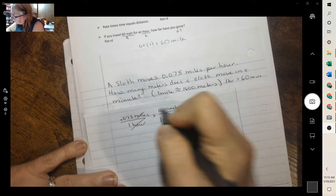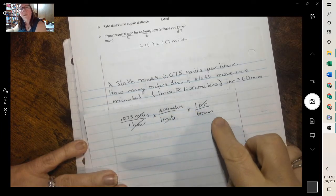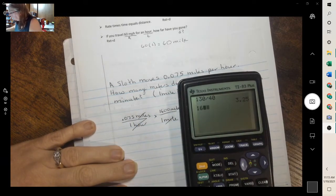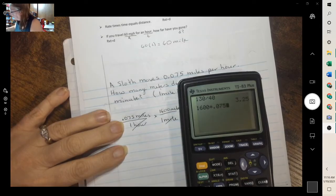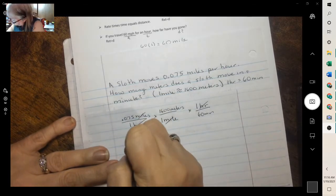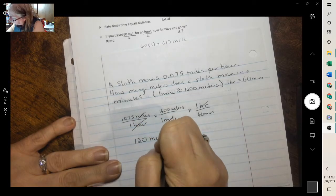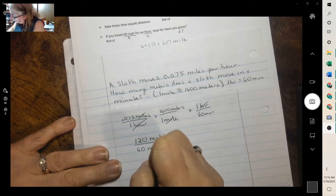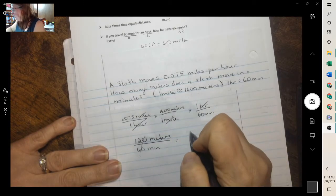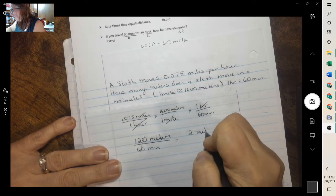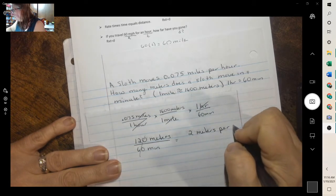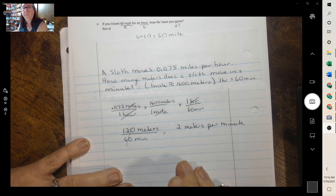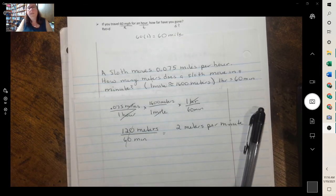Multiply across. 1,600 times 0.075 is 120 meters over 1 times 1 times 60 is 60 minutes. The zeros cancel. 12 divided by 6 is 2 meters per minute. So it will take 2 meters per minute. And that's everything on rate.